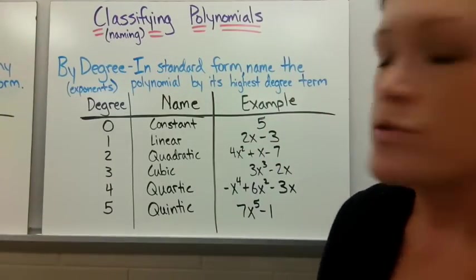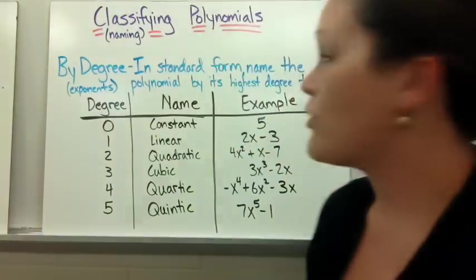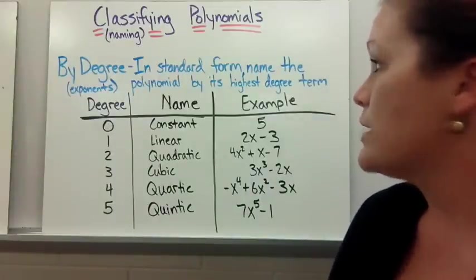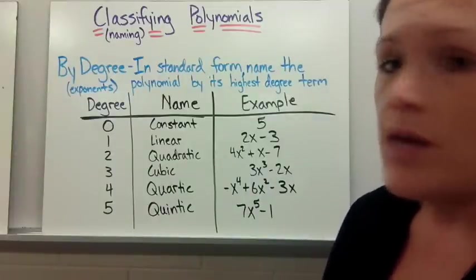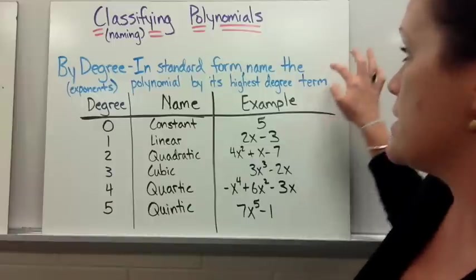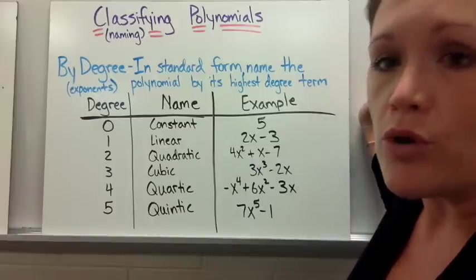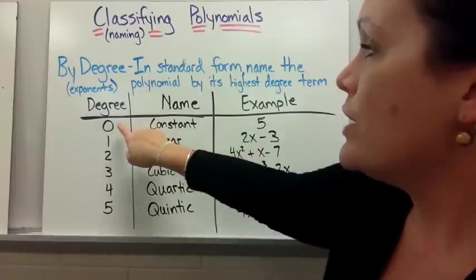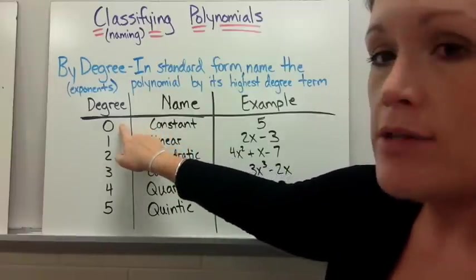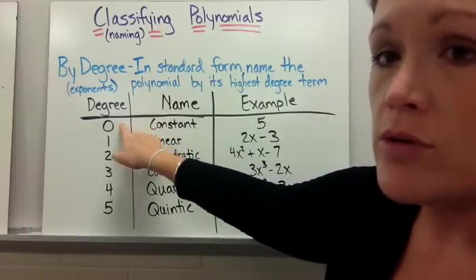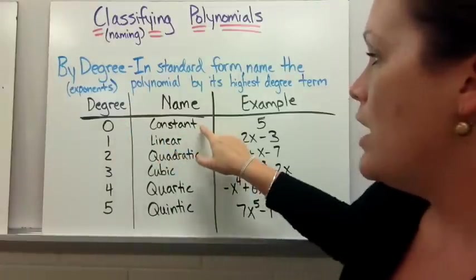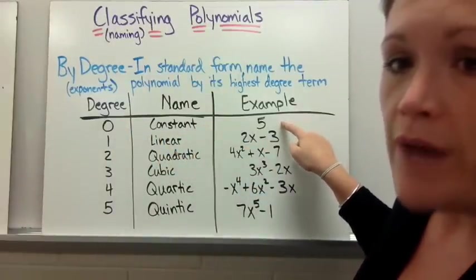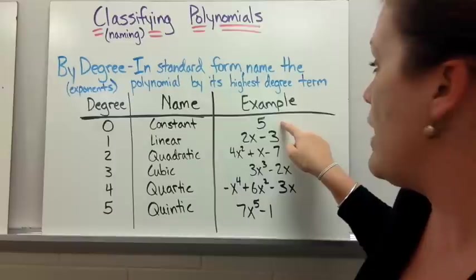If we want to classify polynomials or name them by degree you first want to get them into standard form. So again combine any like terms you have and organize them in descending exponent order from highest exponent down to the lowest. For degree we start with zero. If you have a term that has no variable it would have a degree of zero and we call that a constant. For example I put just the number five. It could be any number but it won't have a variable.